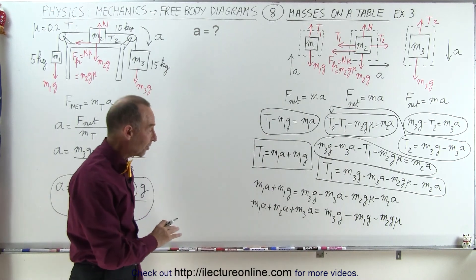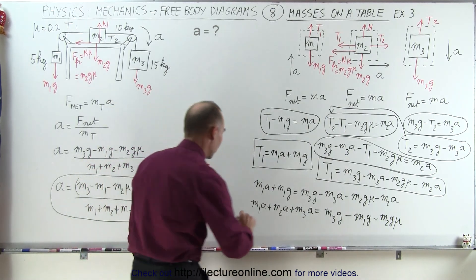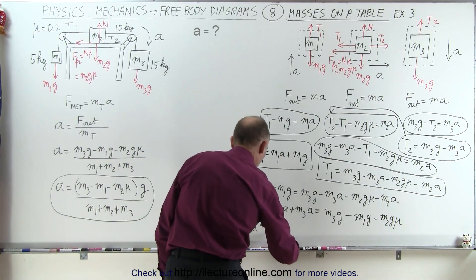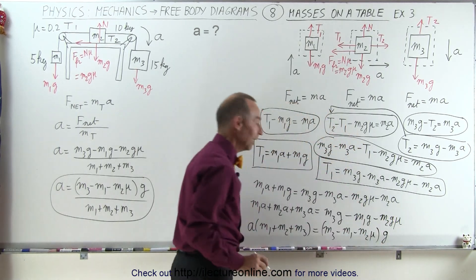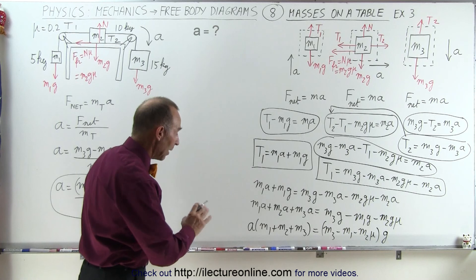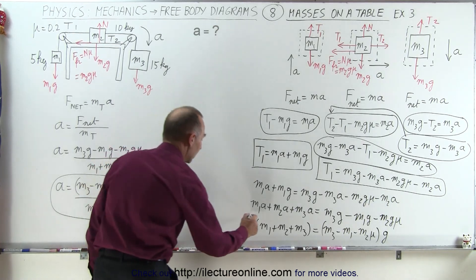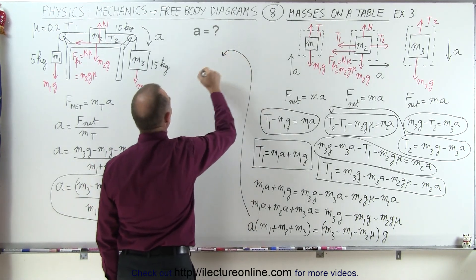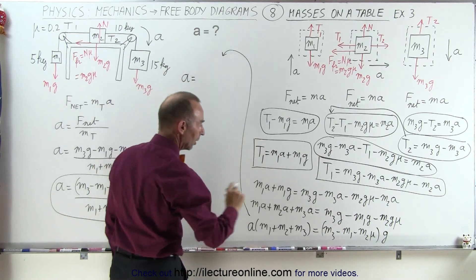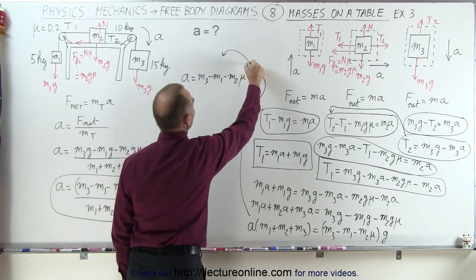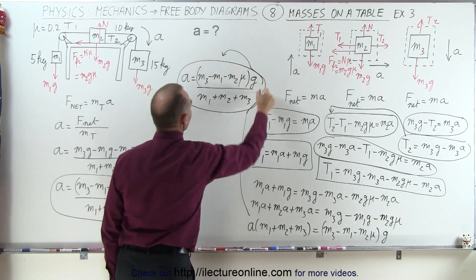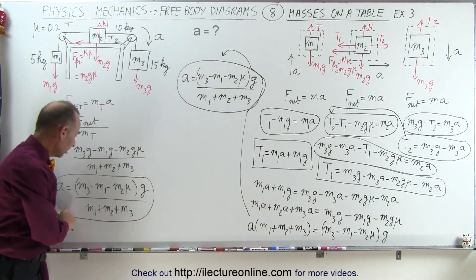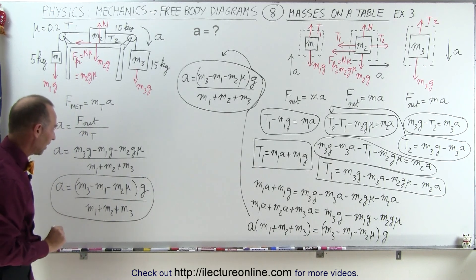Now we can factor out an a on one side and a g on the other side. So we have a times, times g, and then if we divide both sides by M1 plus M2 plus M3, then we get a is equal to plus M3, and that should be exactly the same that we got on this side, and it sure looks like that.